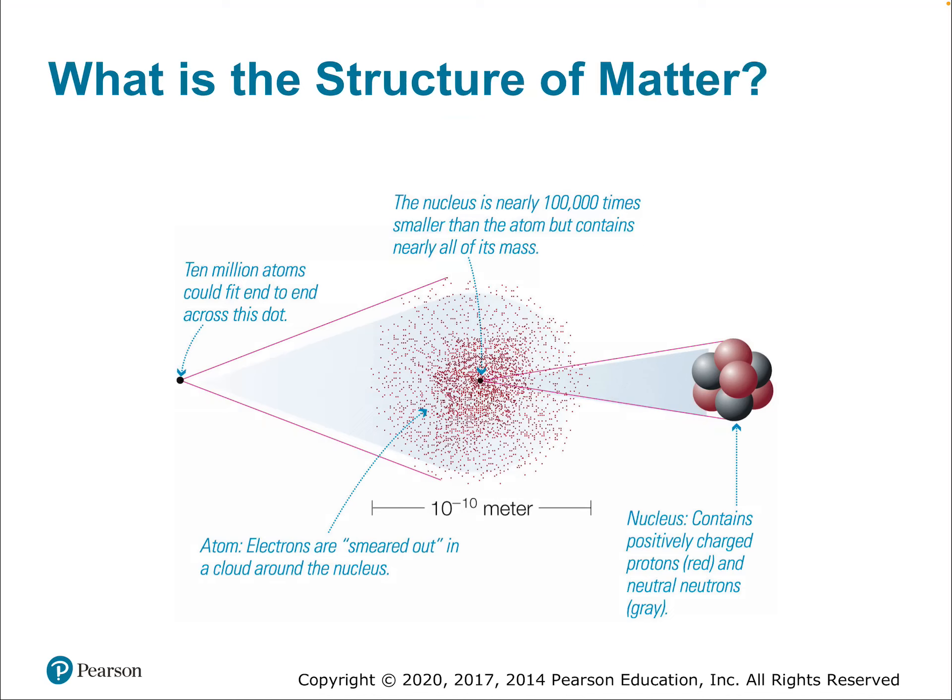So what is the structure of matter? Well, first of all, there is a lot of atoms. Depending on the size of what you're seeing this video on, this dot has somewhere around 10 million atoms that could fit in it. So it gives you an idea of how small an atom is. Remember, an atom is on the scale of about 10 to the negative 10 meters.